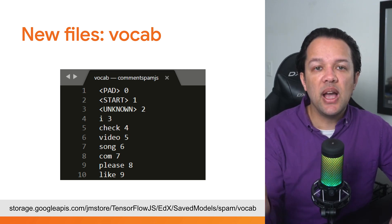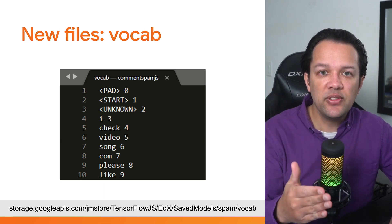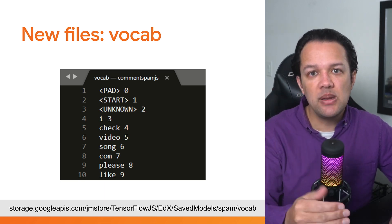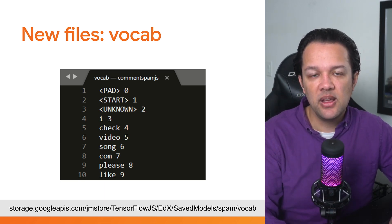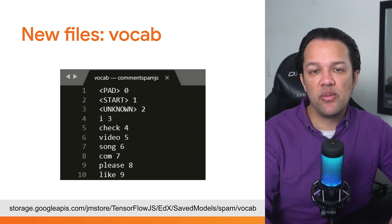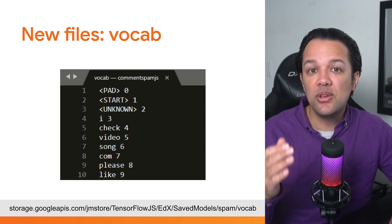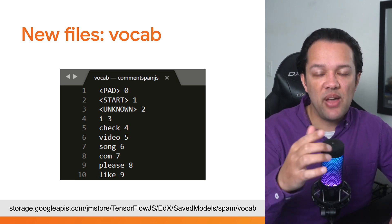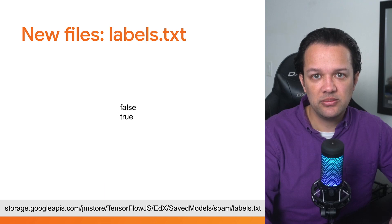Essentially you have some word on the left and a number on the right, separated by a space. This number will represent that word when using it with the model. You can view this file yourself if you wish at the URL shown.